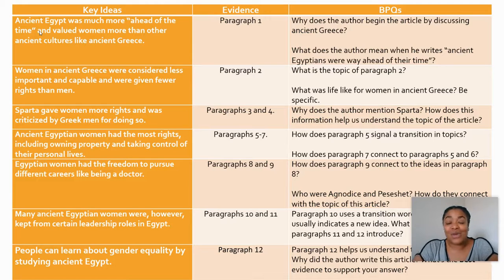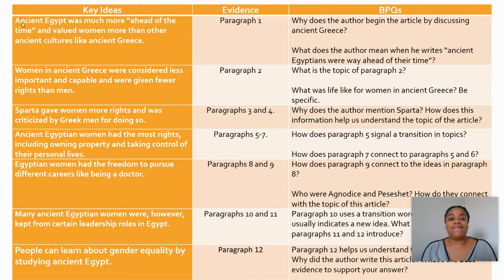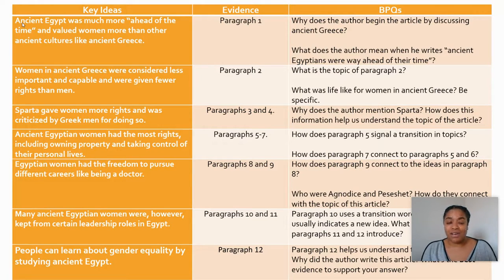Just a quick recap from what we reviewed yesterday. In front of you, you should have your T-chart. We identified seven key ideas, going paragraph by paragraph and combining a few to find the key ideas of those paragraphs. In today's lesson, we're going to focus on a few of those key ideas so that we can better understand them when we prepare to write our ACE response.